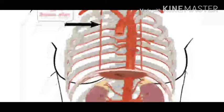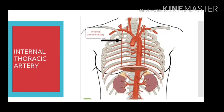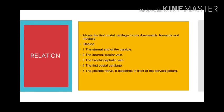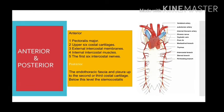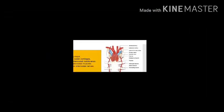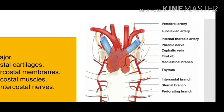The artery terminates at the sixth intercostal space by dividing into the superior epigastric and musculophrenic arteries. It is accompanied by two venae comitantes which unite at the level of the fourth costal cartilage to form the internal thoracic vein. Above the first costal cartilage, the artery runs downward, forward, and medially.